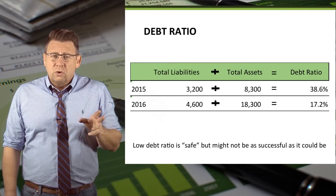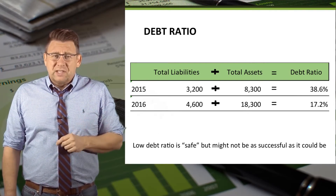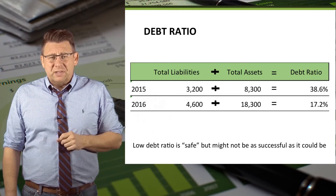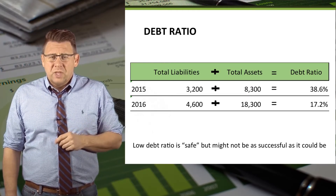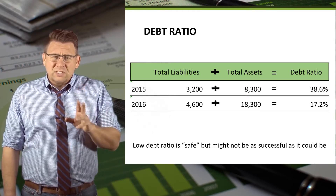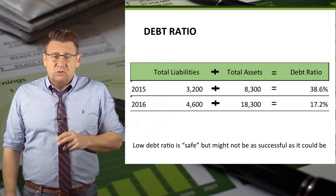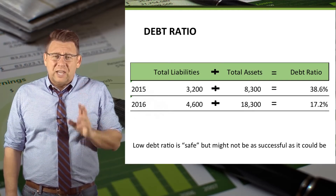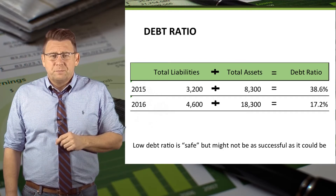These ratios are low, which is safe because it means the company should be able to make its debt payments even during economic downturns. But it also means that this company isn't as efficient or as profitable as it could be, because it's not using leverage to increase profits.